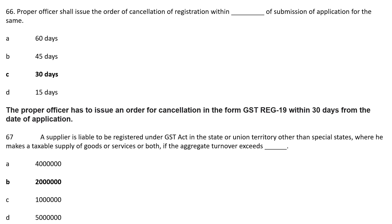Question 65: The proper officer shall issue the order of cancellation of registration within dash days of submission of application for the same. The correct answer is 30 days. In Form GST REG 19, within 30 days from the date of application, the proper officer can issue an order of cancellation.